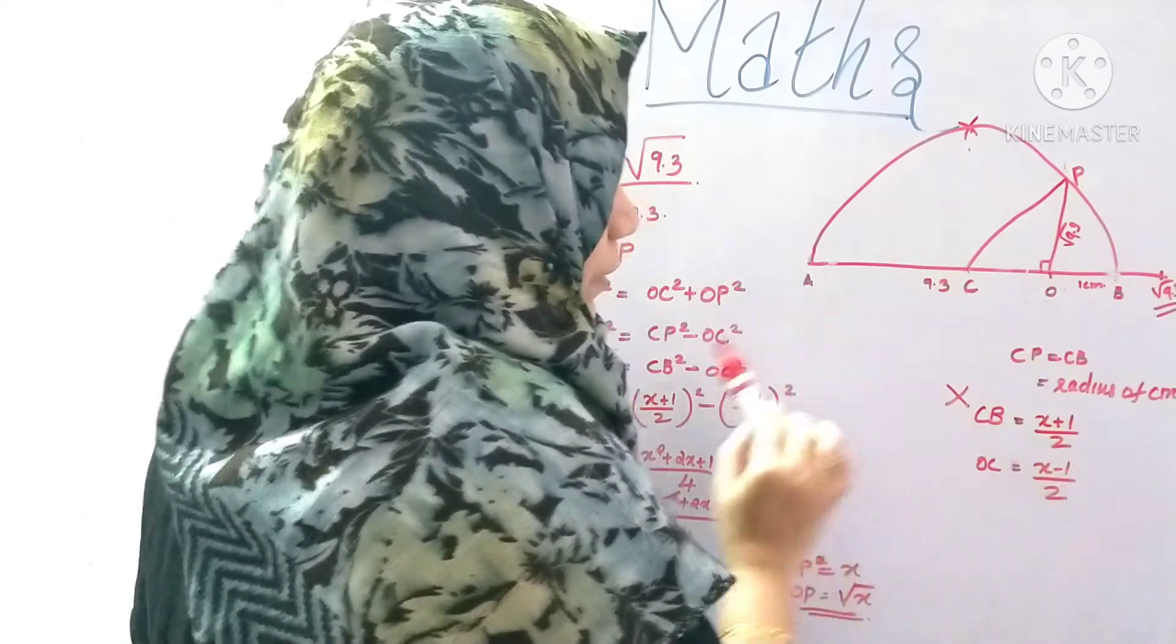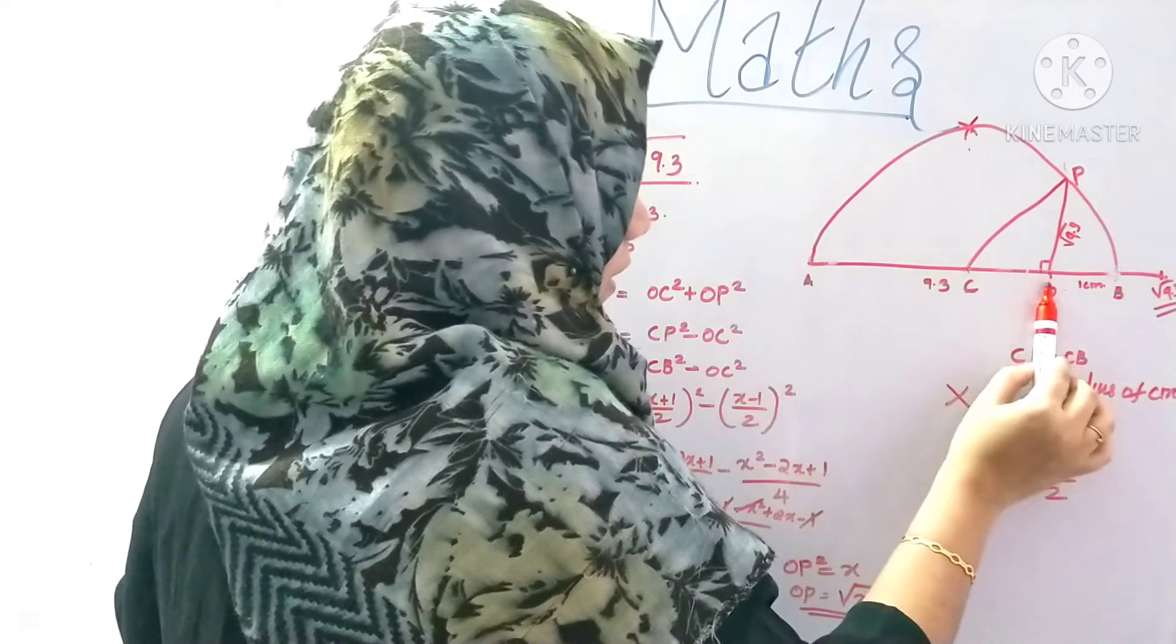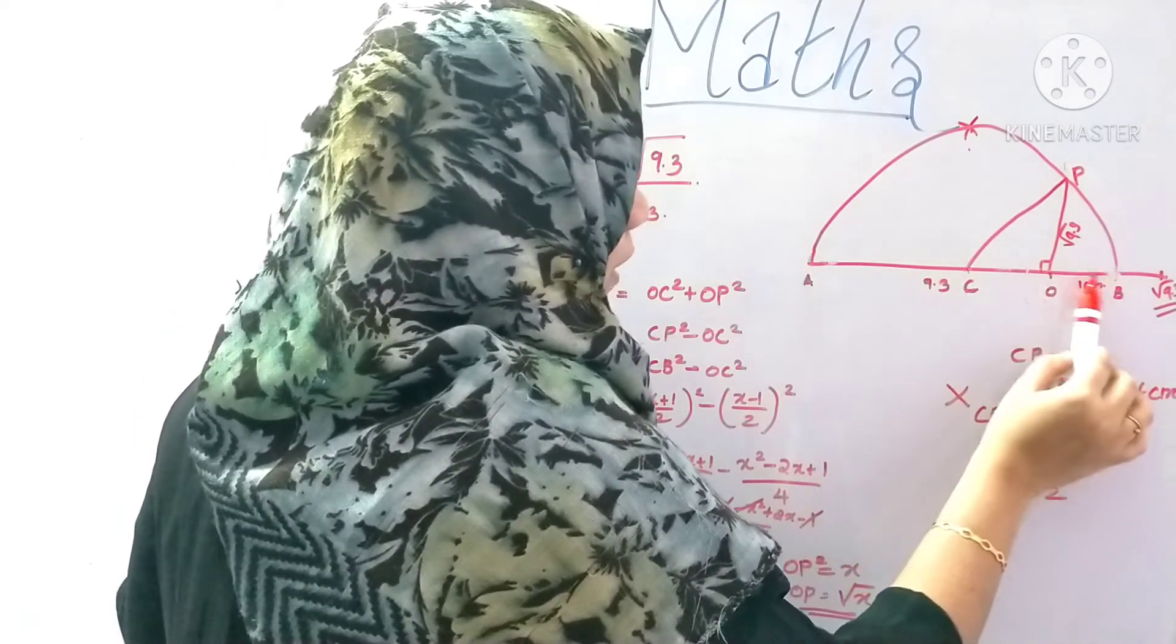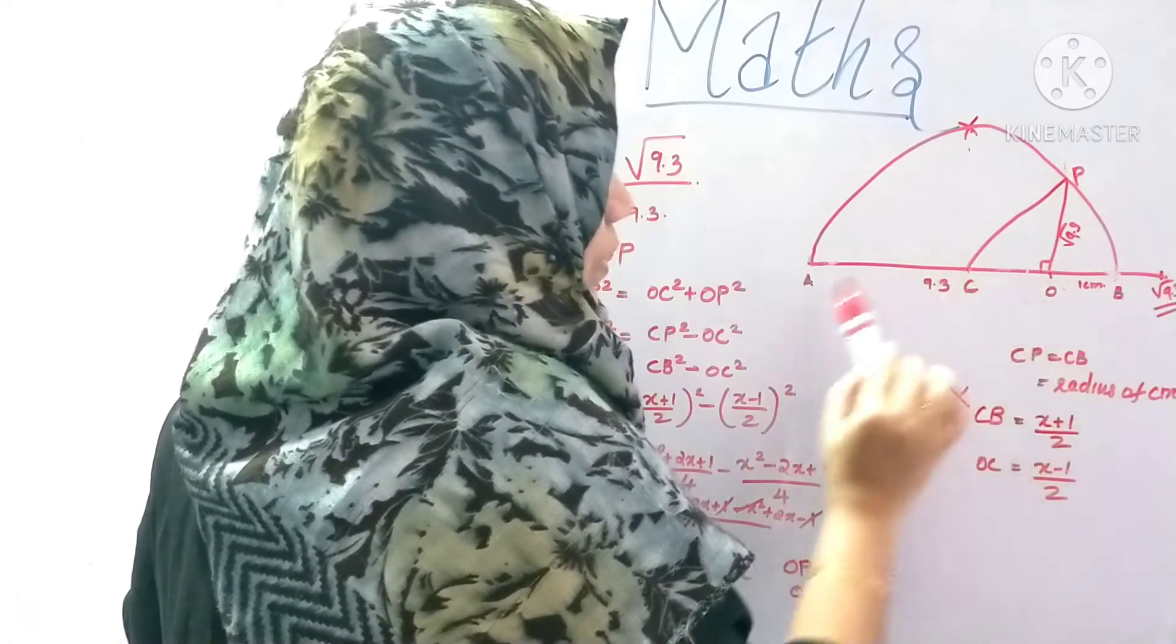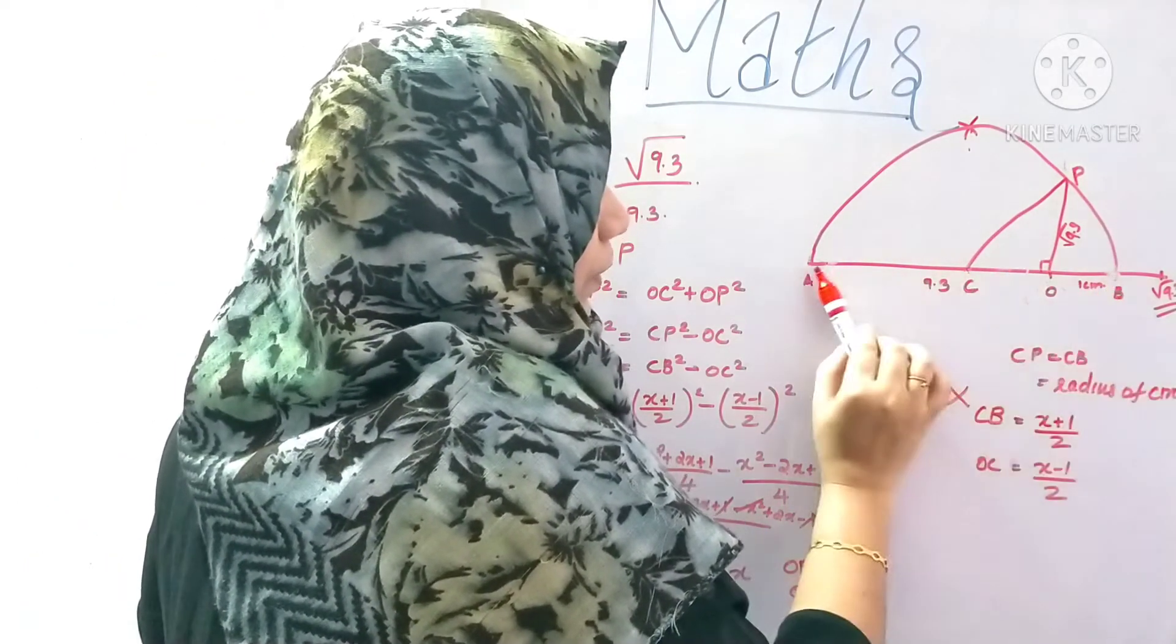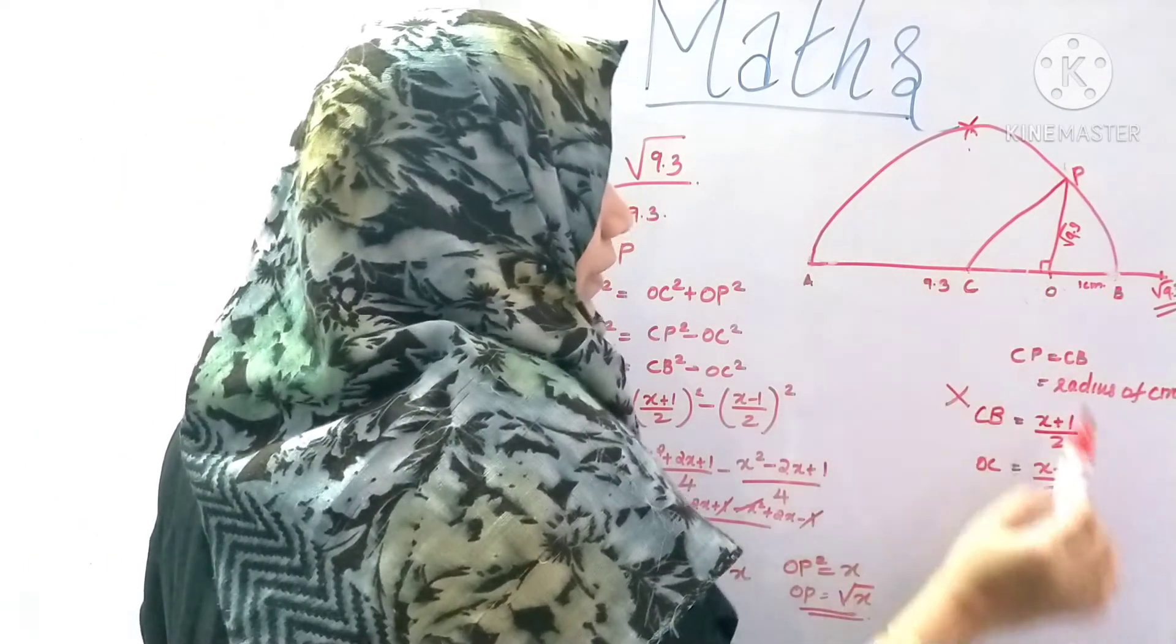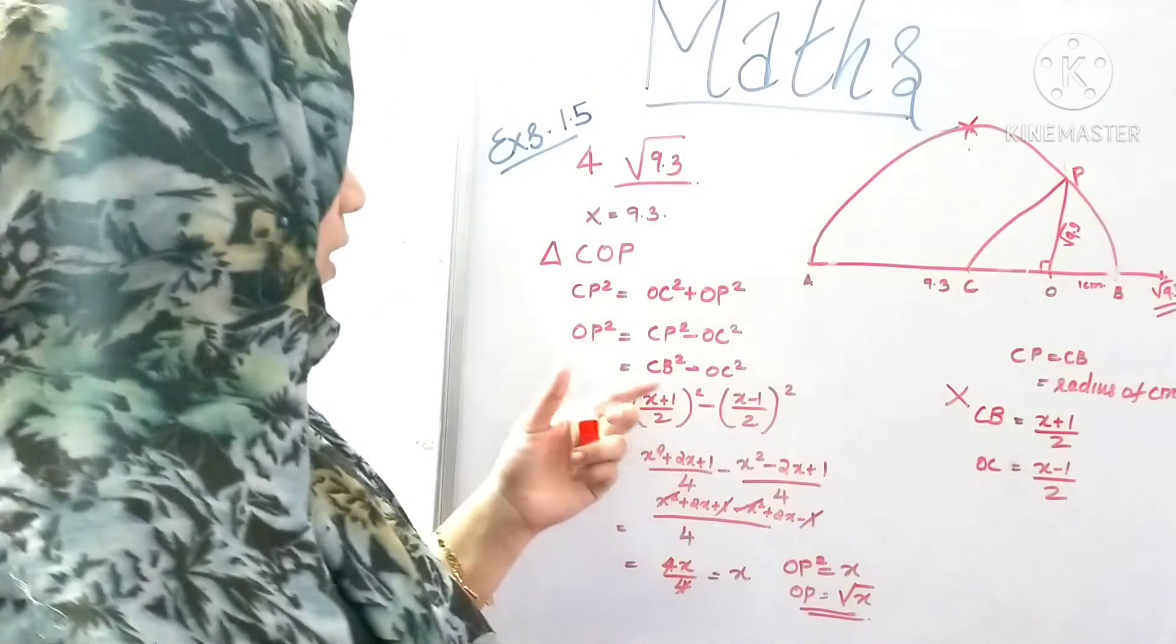If you have OC, this is X minus 1 divided by 2. This is OC. The first is X plus 1 divided by 2. This is X minus 1 divided by 2. We can substitute these two equations.